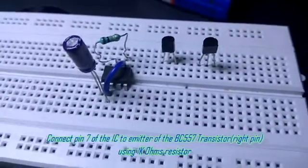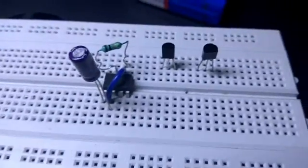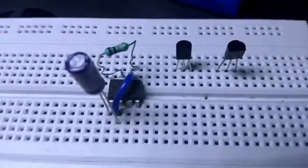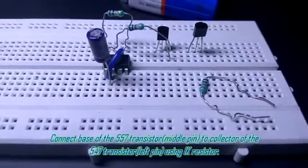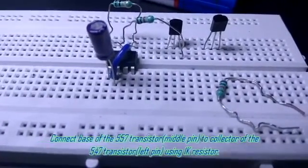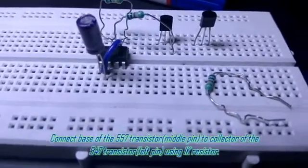Now using another 1k resistor, connect base of the 557 transistor to collector of the BC 547 transistor.